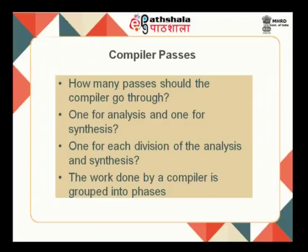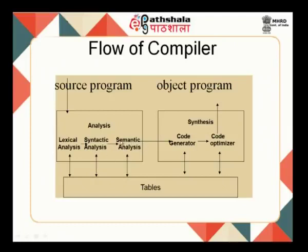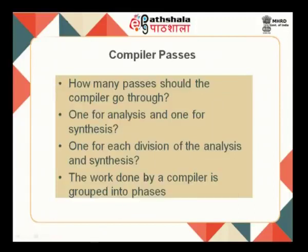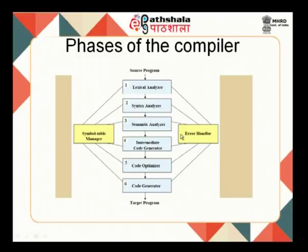How many passes should a compiler go through? There are three parts in the analysis phase and two parts in the synthesis side, plus one intermediate representation part. Rather than six separate passes, what we normally do is combine some phases into groups called passes. The work done by a compiler is typically grouped into phases: lexical phase, syntactic phase, semantic phase, intermediate code generation phase, code optimizer, and finally code generator.